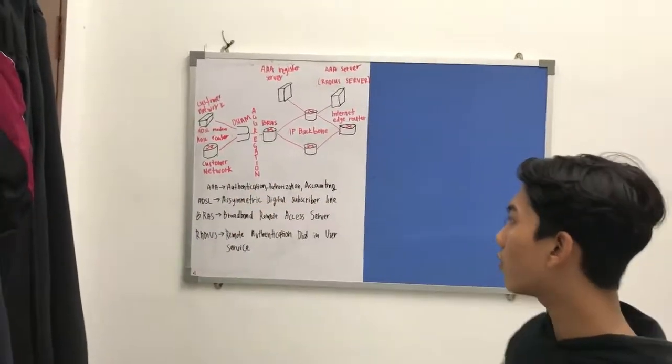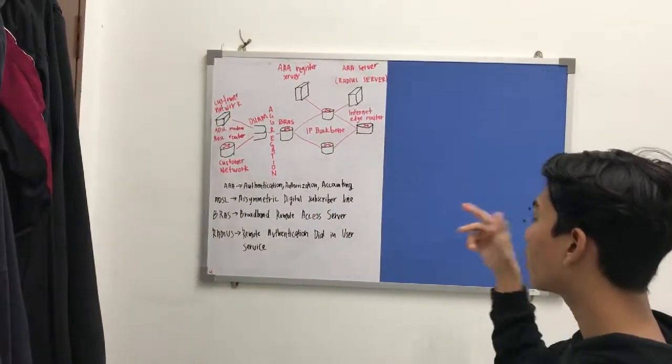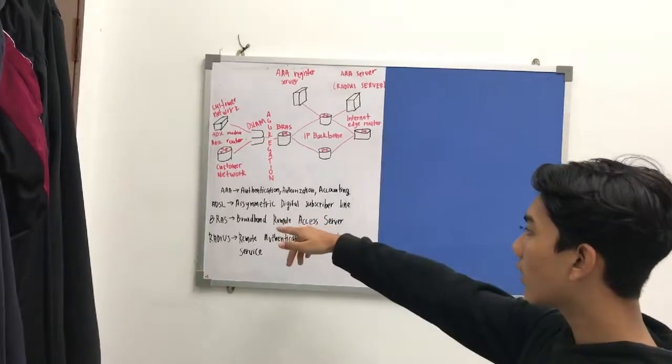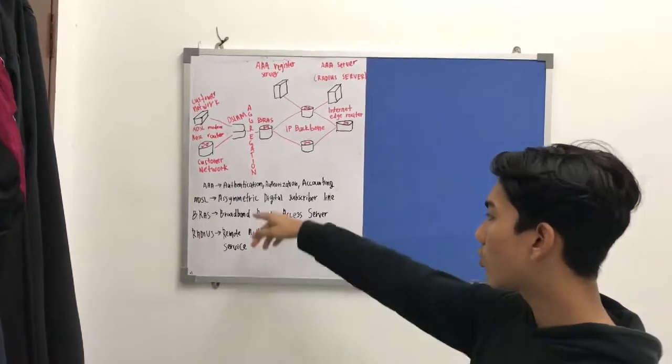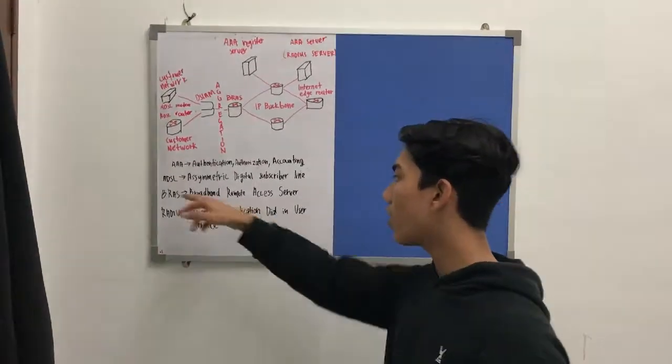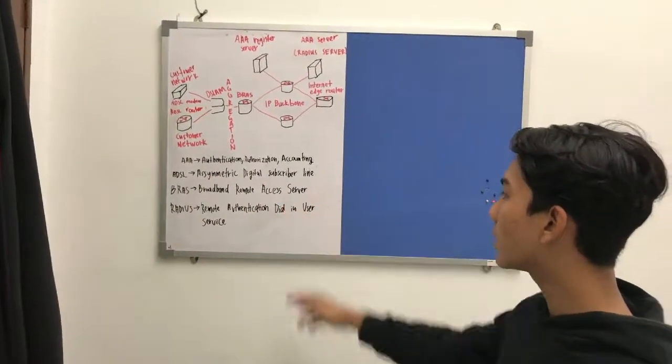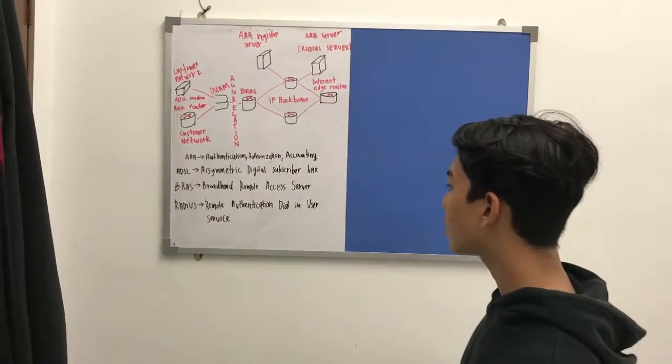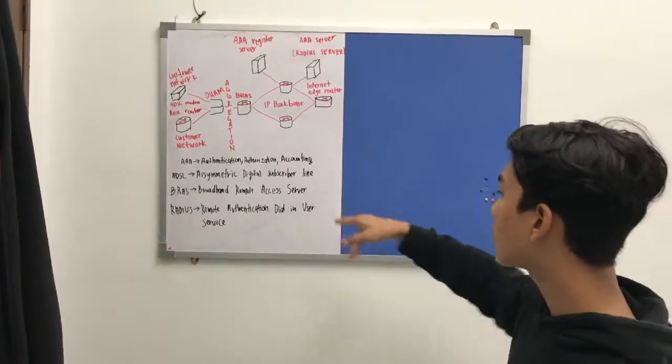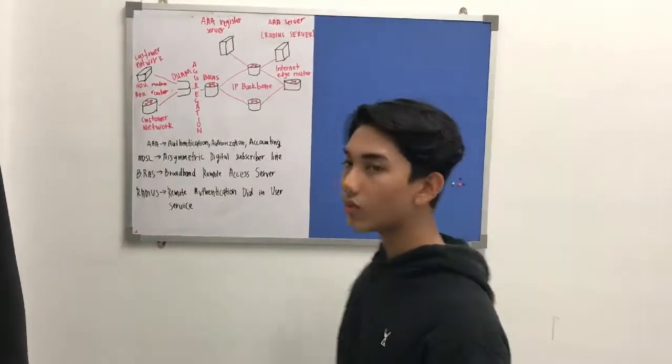First, we got AAA which is time for authentication, authorization and accounting. Next, ADSL which is renowned as asymmetric digital subscriber line. Next, BRAS which we call as broadband remote access server. And next is RADIUS which is remote authentication dial in user service.